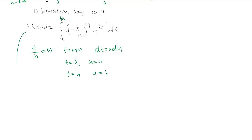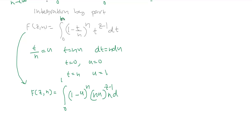After the substitution, f(z, n) can be written as the integral from 0 to 1 of (1 minus u) raised to n, times (nu) raised to z minus 1, times n du. Combining the powers of n gives n raised to z minus 1 times n, which is n raised to z. So f(z, n) equals n raised to z times the integral from 0 to 1 of (1 minus u) raised to n times u raised to z minus 1, du.